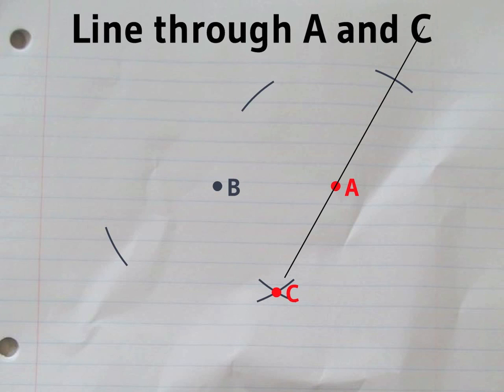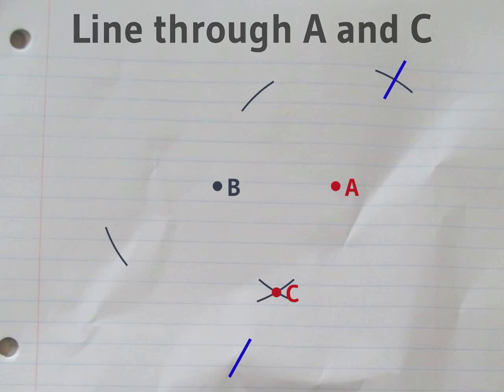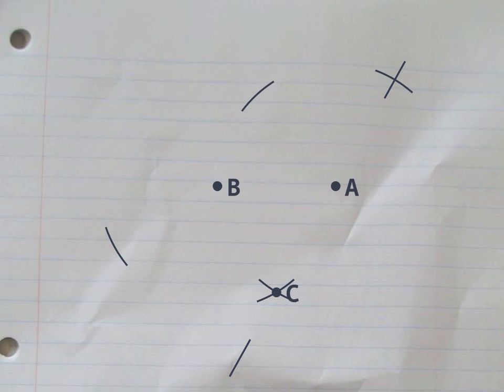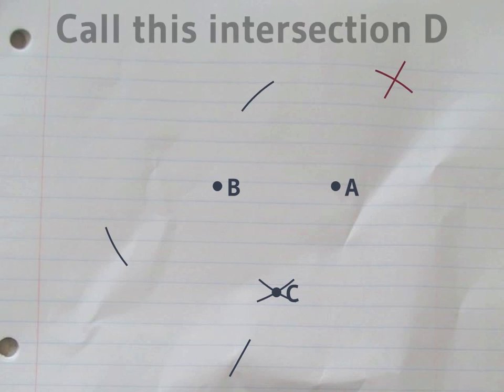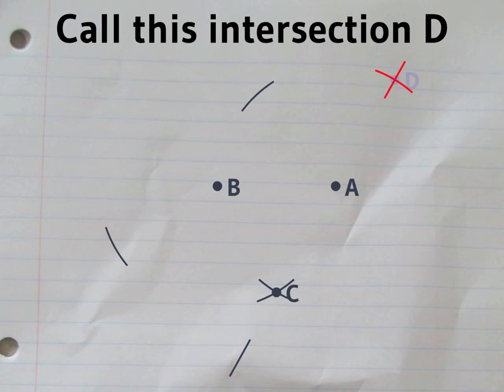Next, draw a line through A and C. The line meets our first circle at this point. We'll call that D.